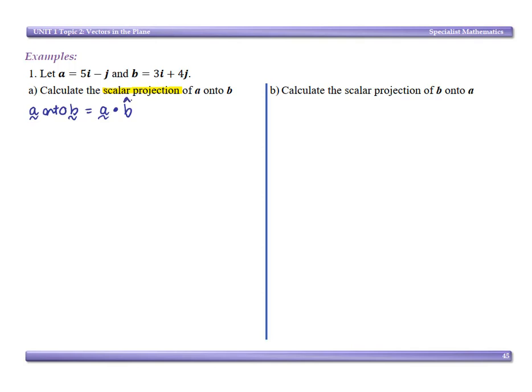So that's going to be the dot product of a and b over the magnitude of b. Now, a quick easy way to remember this formula is thinking about that unit vector being the vector b over its magnitude.